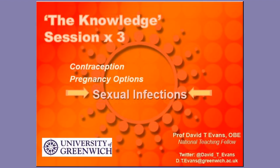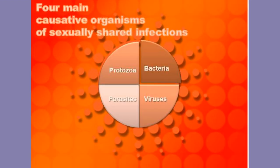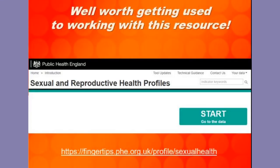This video is a really brief overview of knowledge into sexual infections. There are four main organisms that lead to sexually shared infections. The following slides contain an A to Z of some of the key ones seen in the UK.